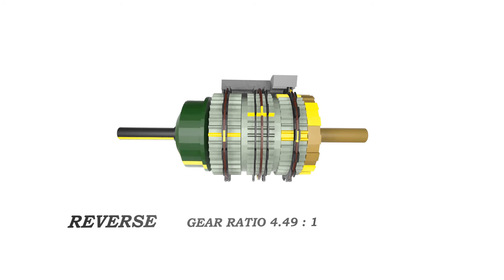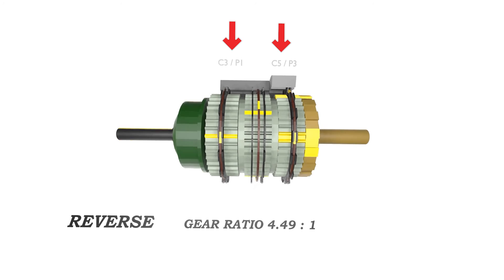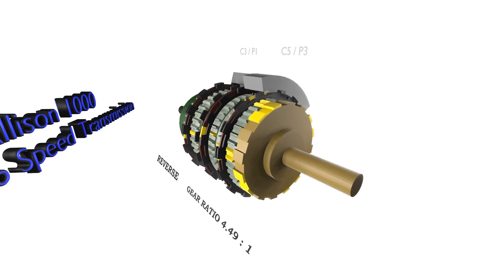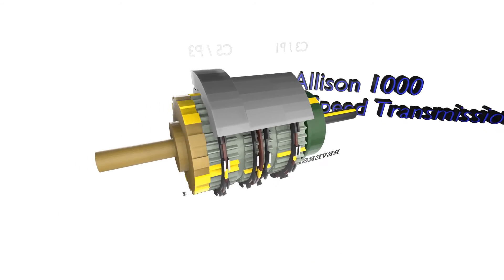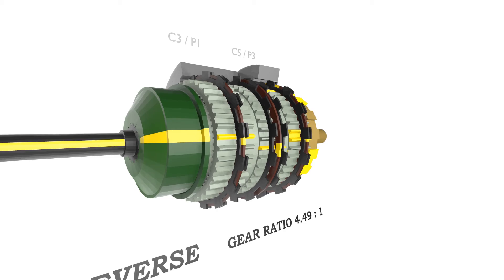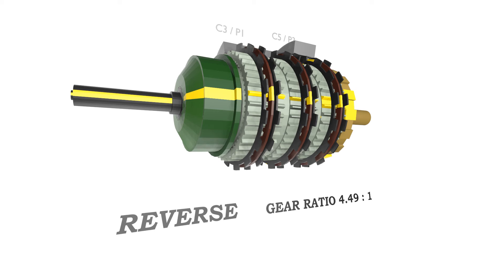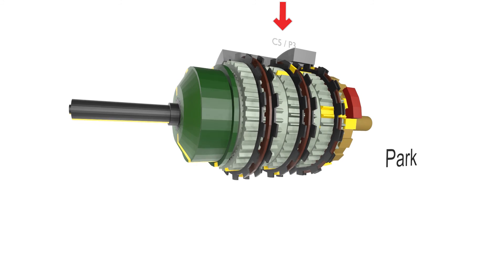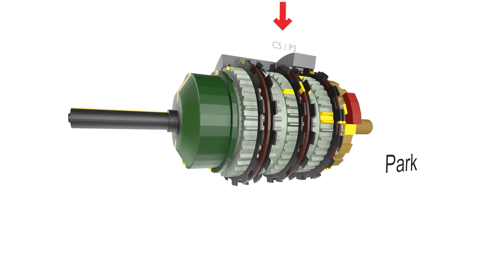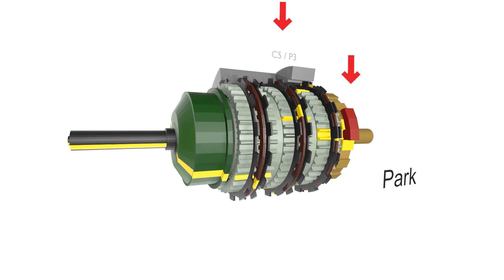For reverse we engage C3 and C5. And lastly we have Park, only the C5P3 system is engaged. The parking ball engages the C5P3 system to stop the whole output from rotating.